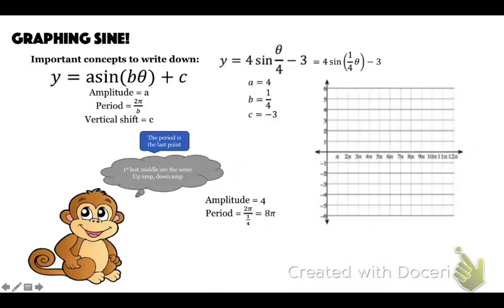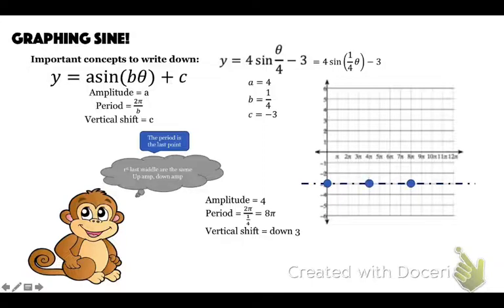The period is eight pi, and the vertical shift is down three. So I move down three — that's where I start from. First, last, middle are the same. First point is there, last point is at eight pi, middle point is at four pi. Go up the amplitude, go down the amplitude, and this just repeats — and there is our wave.